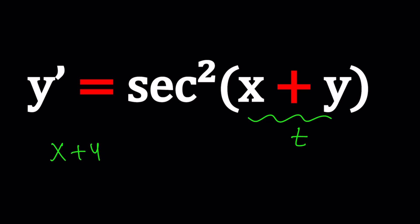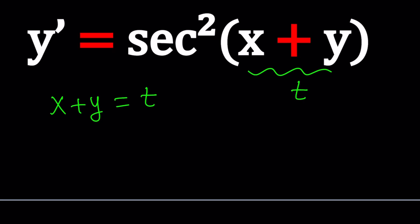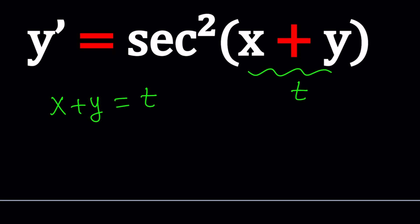Replacing x + y with t implies that I can differentiate both sides. When you differentiate both sides, the derivative of x with respect to x is 1, the derivative of y with respect to x is y', and the derivative of t is t'. From here we get something nice.